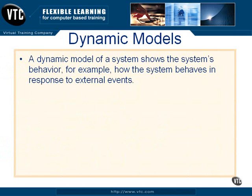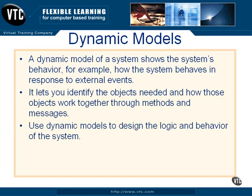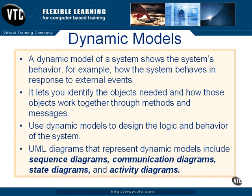A dynamic model, on the other hand, shows the system's behavior. For example, a dynamic model might show how the system behaves in response to external events. A dynamic model lets you identify the objects that your system needs, and how those objects work together through methods and messages. You should use dynamic models to design the logic and the behavior of the system. UML diagrams that represent dynamic models include sequence diagrams and communication diagrams, which are both types of interaction diagrams, as well as state diagrams and activity diagrams.